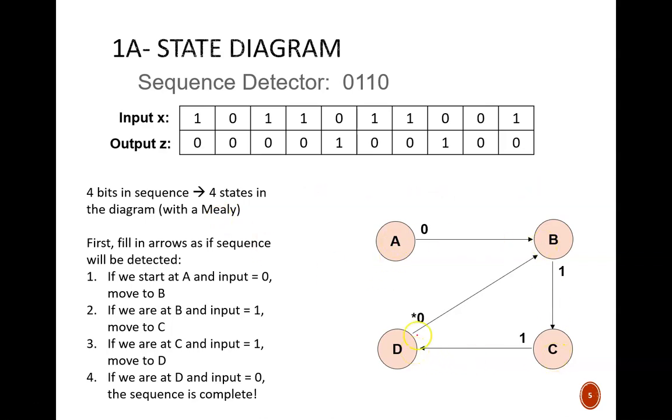State A represents starting from scratch. State D represents being at the cusp of completing the sequence. But, we still need that final 0 to complete it.